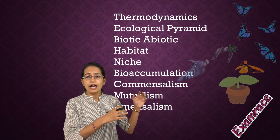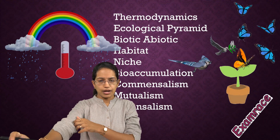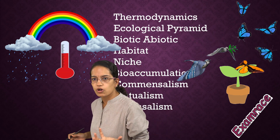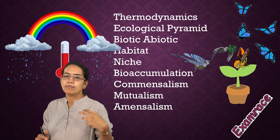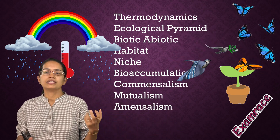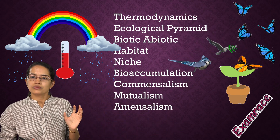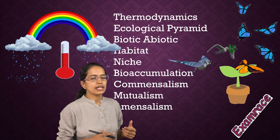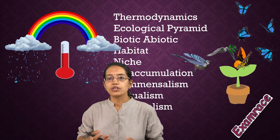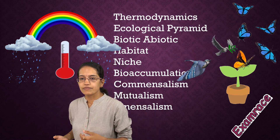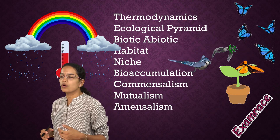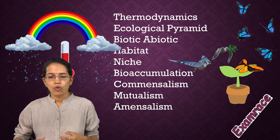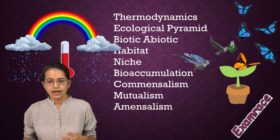The next topic is biotic and abiotic components. Biotic are the living components — so flora and fauna, plants and animals all constitute the biotic element. Under abiotic we talk about non-living things: temperature, climate, humidity, precipitation — all those are abiotic.